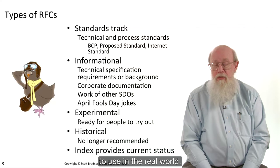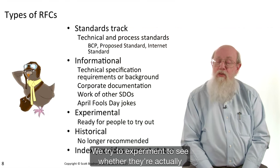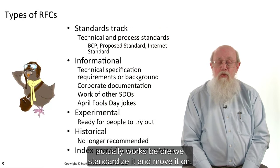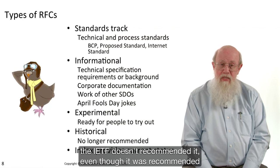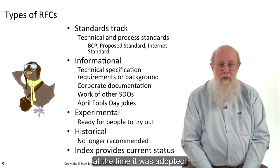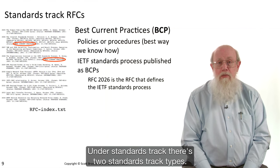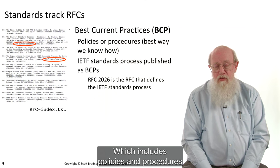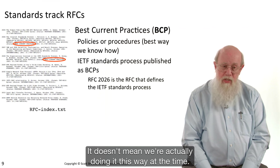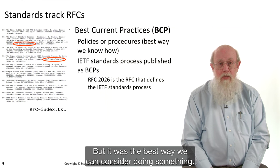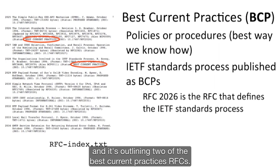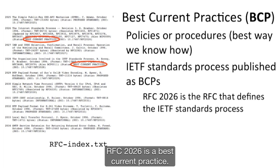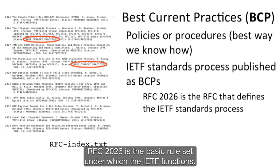Experimental RFCs are ones that aren't really ready for people to use in the real world — we're trying to experiment to see whether they're actually going to work. This is a bit of the running code concept: we want to make sure technology actually works before we standardize it. Historical generally means the IETF doesn't recommend it, even though it was recommended at the time it was adopted. Under standards track, there are two types. There's best current practices, a sort of one-step standards track which includes policies and procedures that state the best way we know how to do something. RFC 2026, shown in this piece of the RFC index, is a best current practice and is the basic rule set under which the IETF functions.